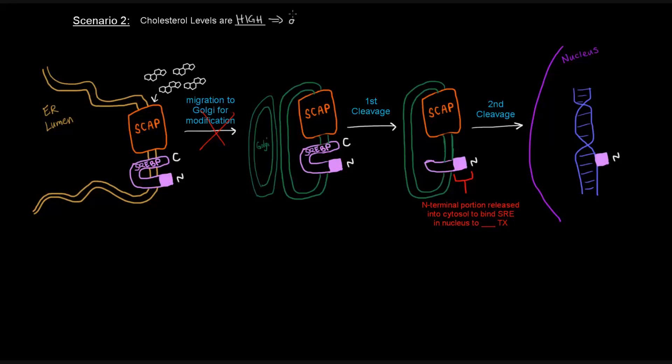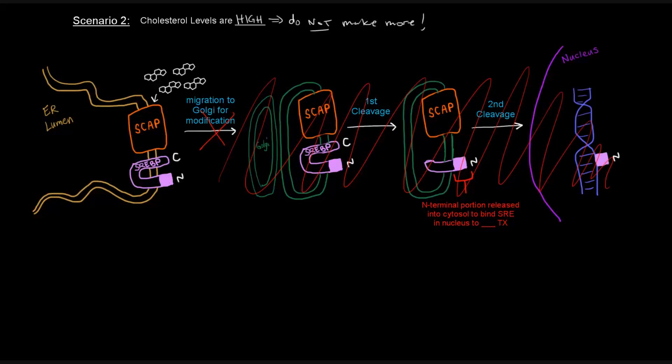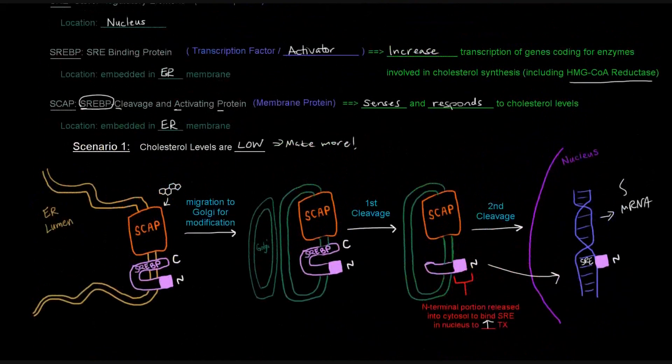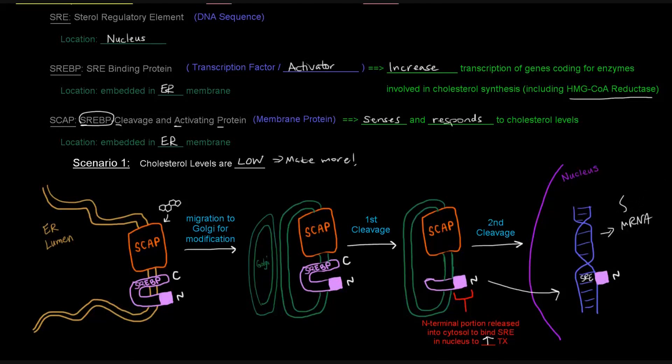If the cholesterol levels are high, we need to not make any. So do not make more. So we're not going to go through and follow through with the transcription of this gene if we've already got plenty of cholesterol around and we don't need more reductase to make more of it. So none of this stuff that follows would occur when the cholesterol levels are high. It's only when cholesterol levels are low that the SCAP will go ahead and activate the SREBP and allow it to bind the SRE to have more transcription occur, make more reductase, and as an extension, of course, more cholesterol. So that's the transcriptional level.